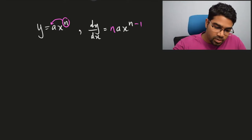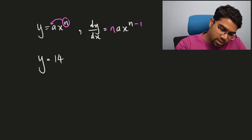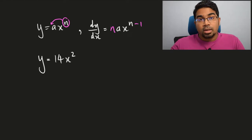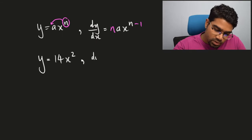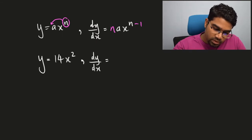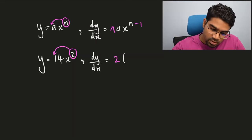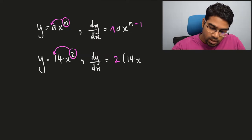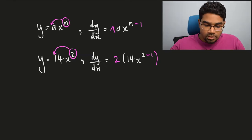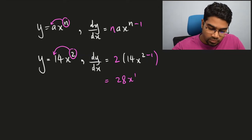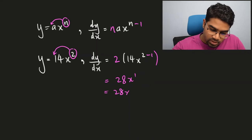Now how would this look if we had y equals 14x squared? When we apply the formula to get dy/dx, which is the first derivative, we take the power and multiply the whole term by the power. So this would be 2 times 14x, and then the power itself we subtract 1. So this equals 28x to the power of 1, which of course we simply write as 28x.